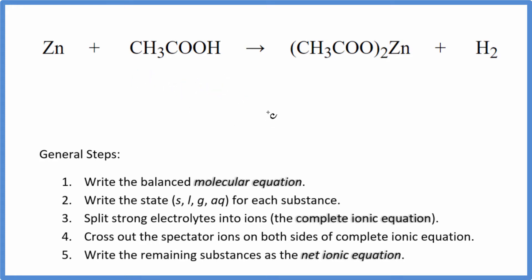So when we balance net ionic equations, first we have to balance the molecular equation. This here is the molecular equation. I can see that I have two of these acetate ions here, so I'm just going to double the acetic acid. I can also see that I have two hydrogens here to match these two hydrogens, zinc on each side. That's the balanced molecular equation.